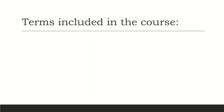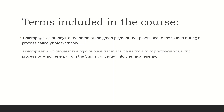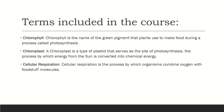Some key terms included in this topic are: chlorophyll — the green pigment that plants use to make food during photosynthesis; chloroplast — a type of plastid that serves as the site of photosynthesis, where energy from the Sun is converted into chemical energy; and cellular respiration — the process by which organisms combine oxygen with food molecules.